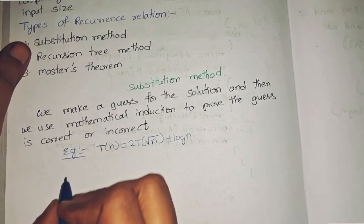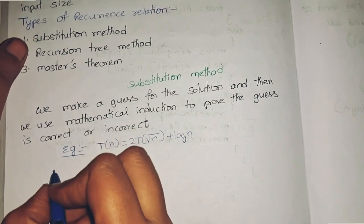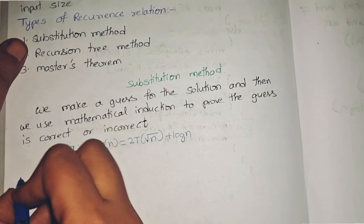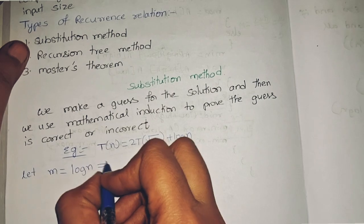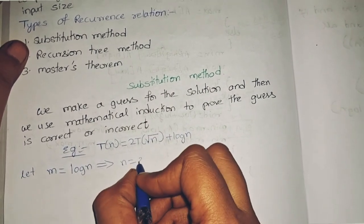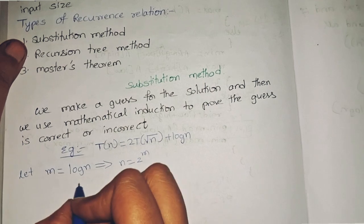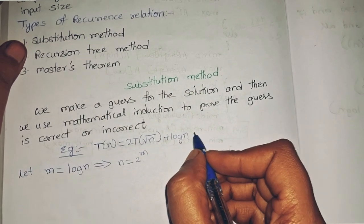We are going to simplify it by letting m = log n. So let m = log n, that means n = 2^m. Now substitute this in the first equation.